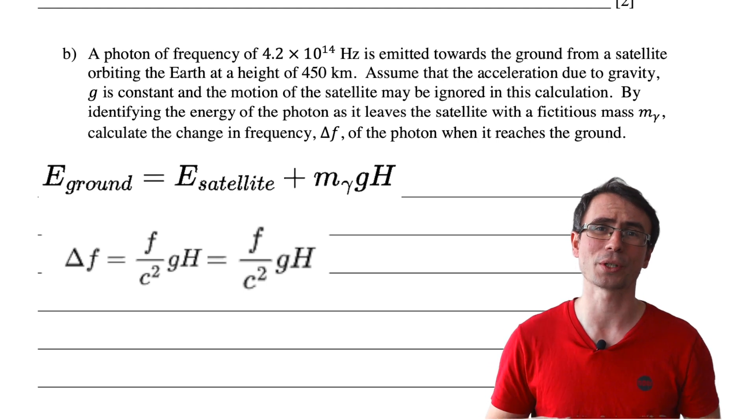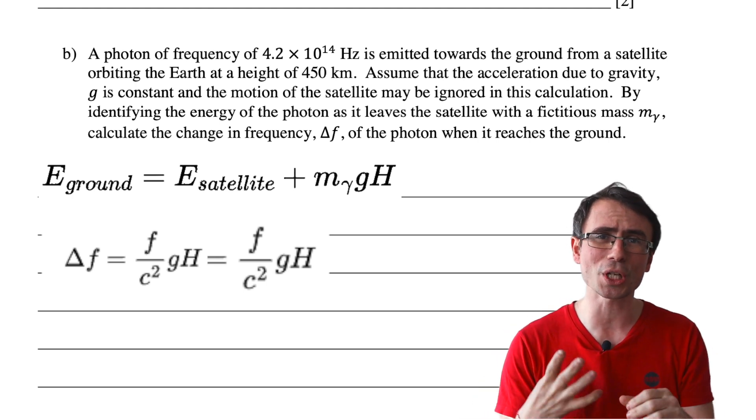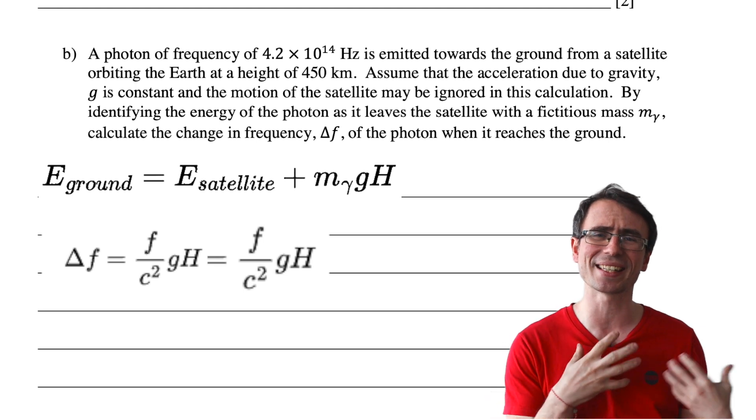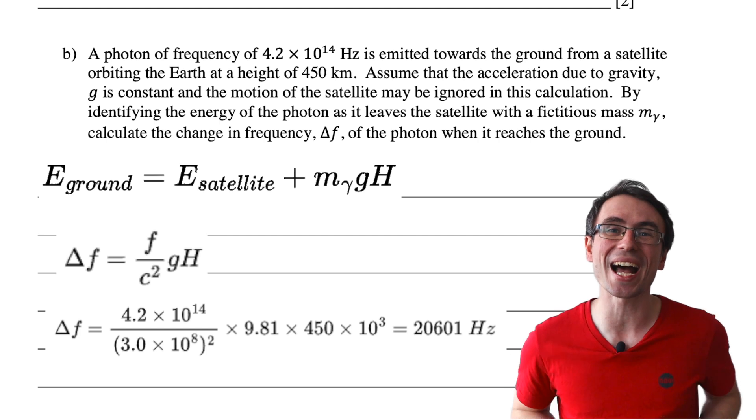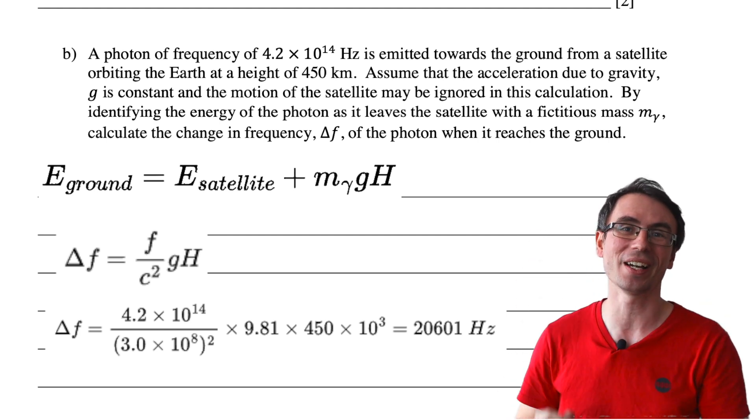Well, in this problem we know what the original frequency is, we know what g is, we know what the height is, and the speed of light. So we can calculate the change of frequency to be 20,601 hertz.